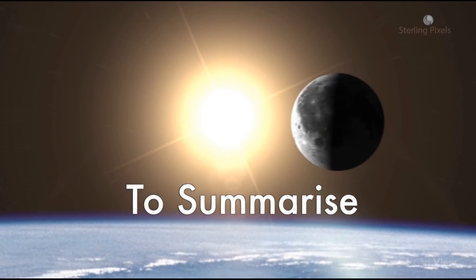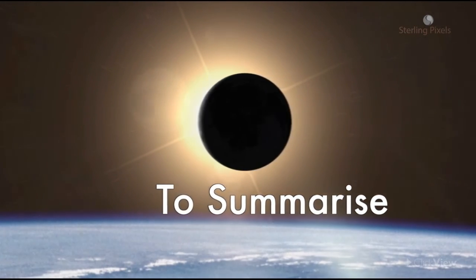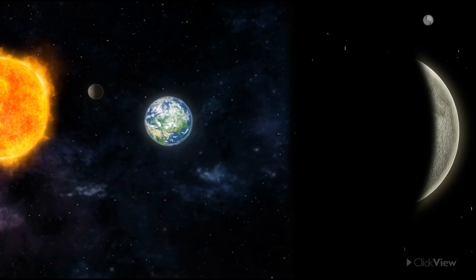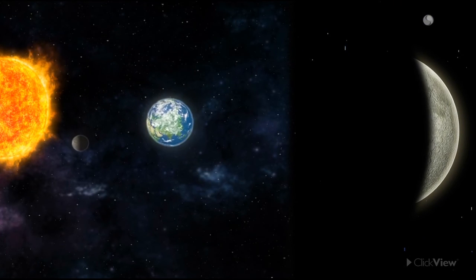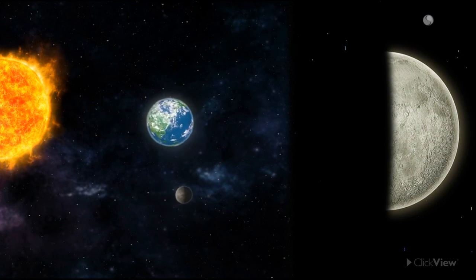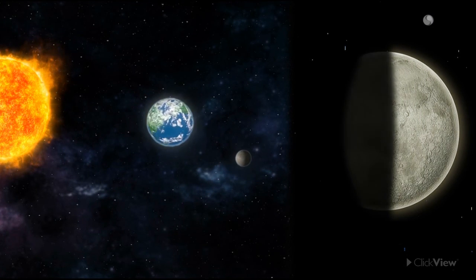To summarize, the size of the illuminated portion of the moon visible from the Earth varies due to its revolution around the Earth. These are called the phases of the moon.